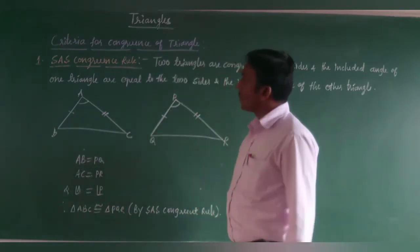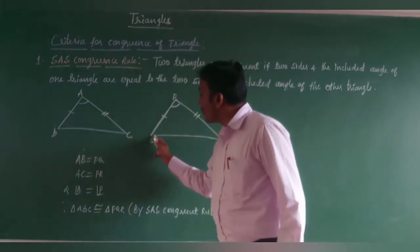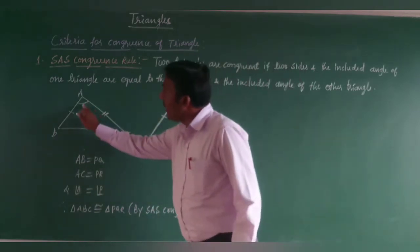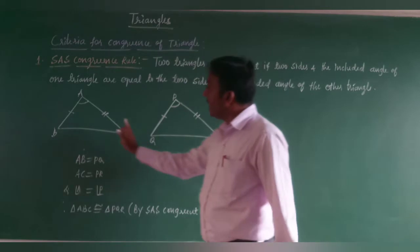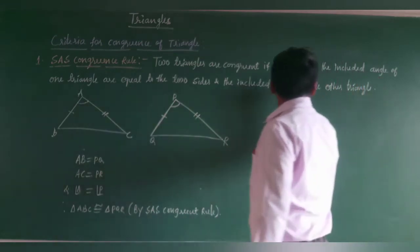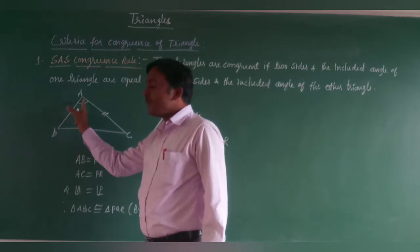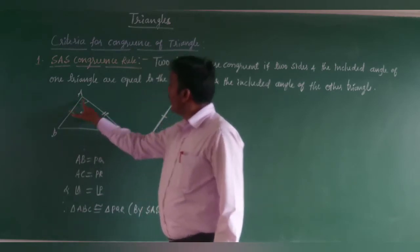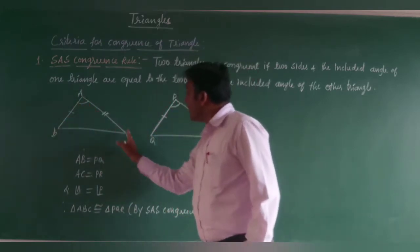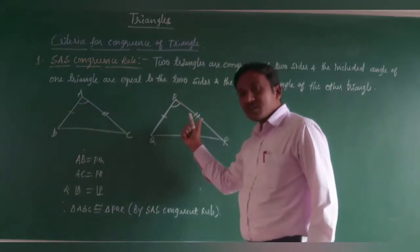Here triangles ABC and PQR are congruent by the SAS rule. AB corresponds to PQ and AC corresponds to PR. The included angle means these two sides include this angle. So angle A is the included angle between AB and AC, and angle P is the included angle between PQ and PR. Two sides and one included angle of one triangle are equal to those of the other triangle.